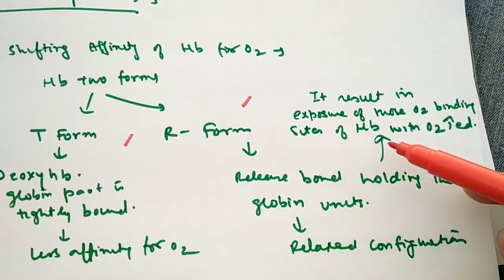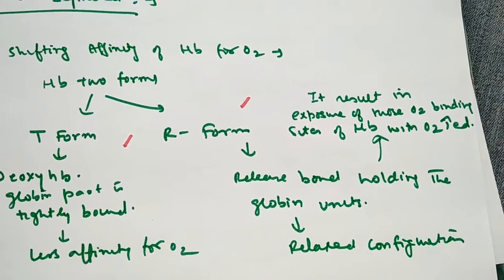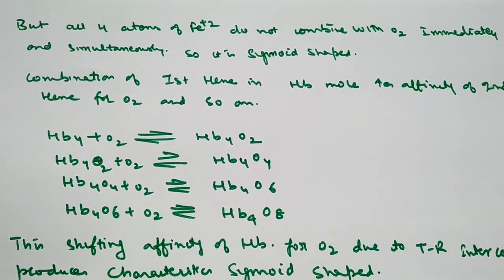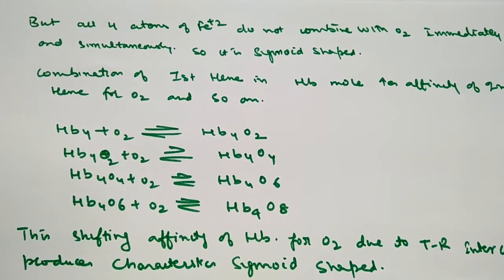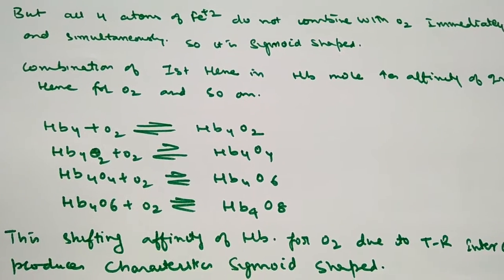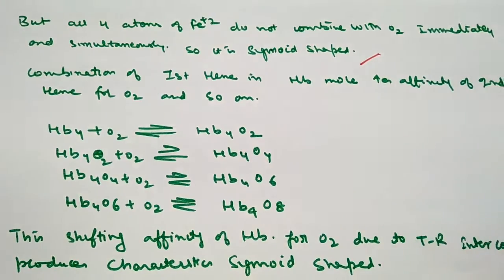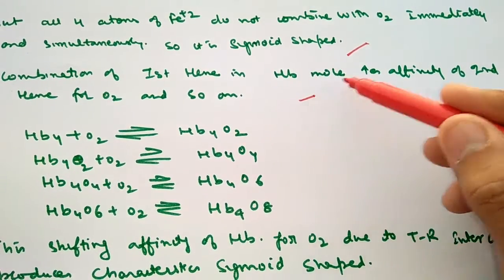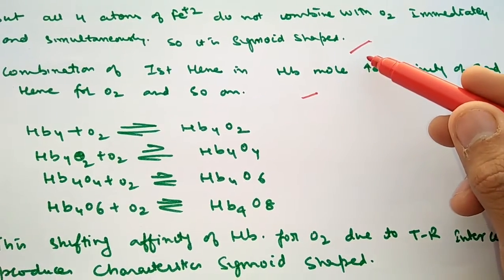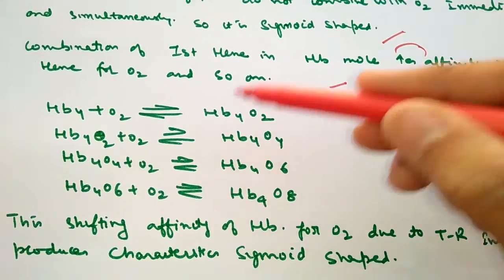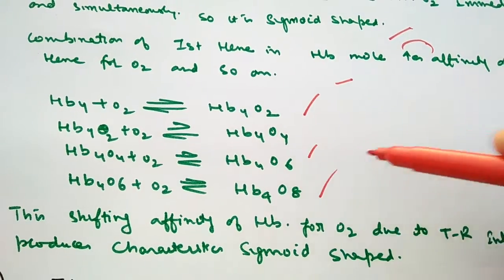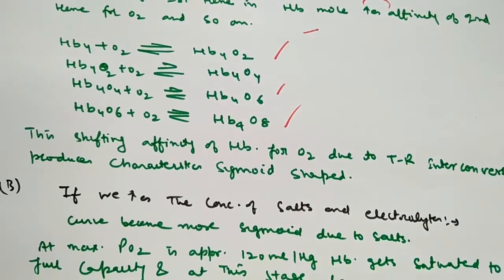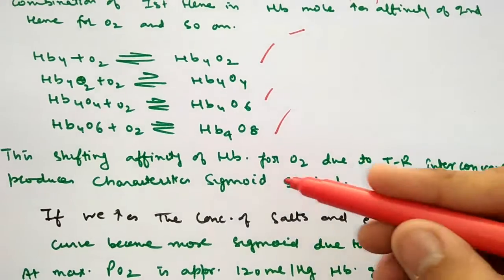The saturation of the four Fe2+ heme atoms does not occur simultaneously or immediately — it occurs in steps. The first combination of a heme molecule with oxygen increases its affinity for the next oxygen, and so on, step by step. The shifting affinity of hemoglobin for oxygen due to the T-R inter-conversion gives the sigmoid shape to the oxygen dissociation curve.